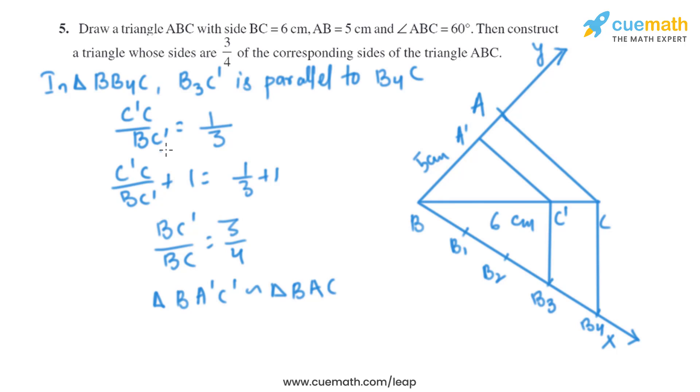And we have got C'C divided by BC' equals one by three. So if we add one to both the sides, we'll get BC' by BC equals three by four.